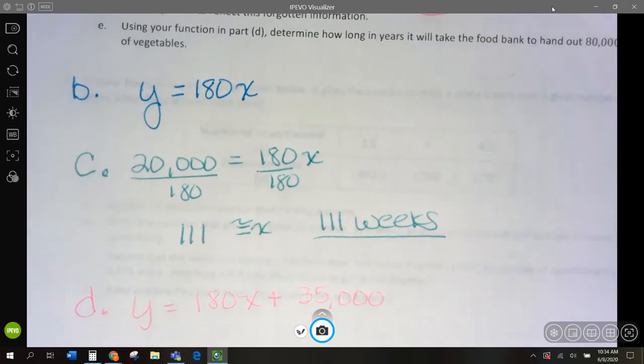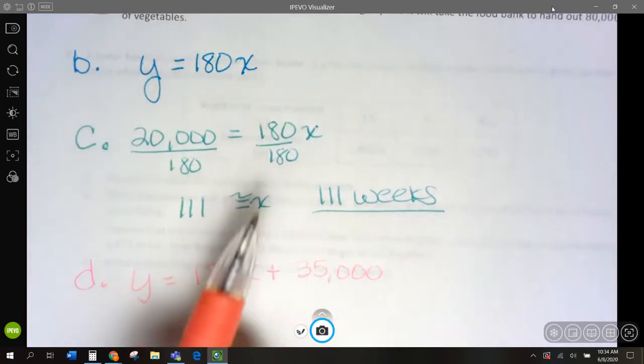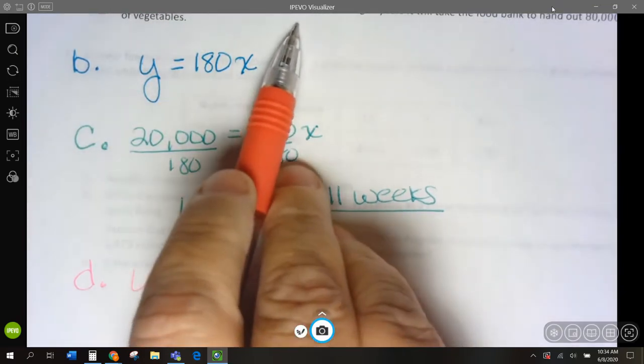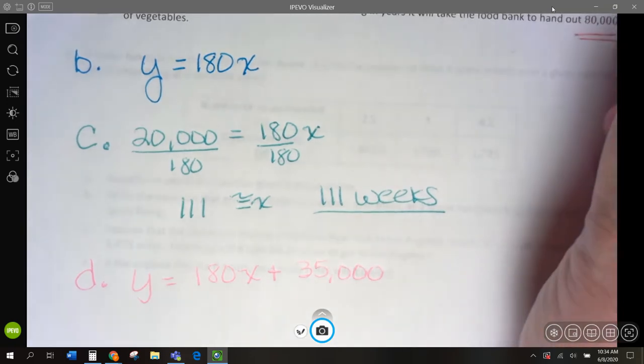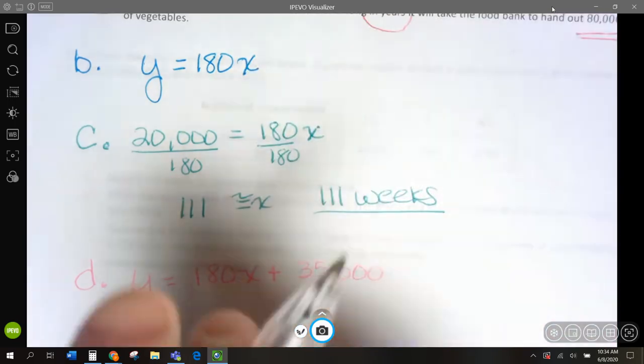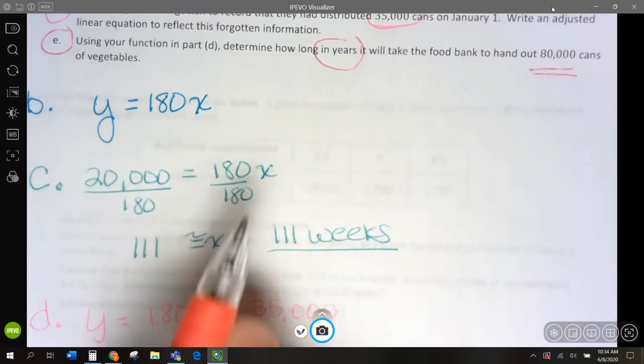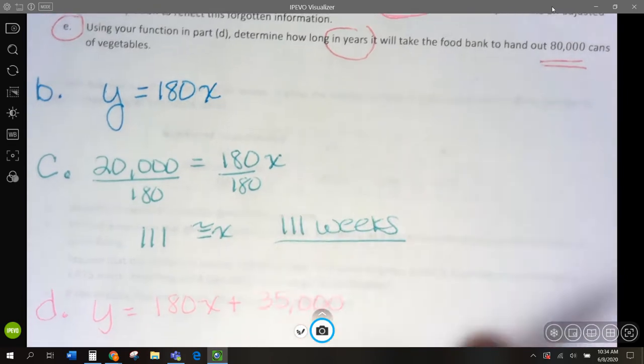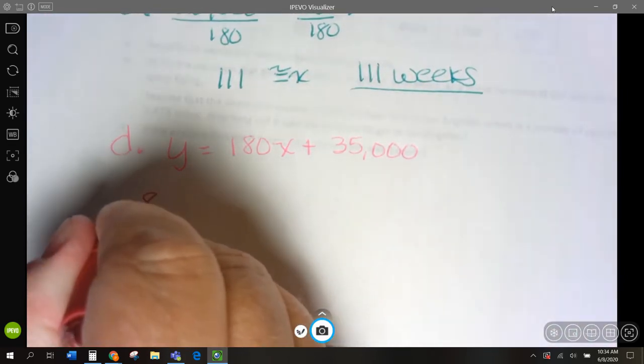And then E says, I use this part, this equation in D. Determine how long it will take for the food bank to pass out 80,000 cans. And they want to know in years. In years. 80,000 cans. Using this equation, how many? 80,000 cans. So, 80,000 is going to be y. This is going to be E.